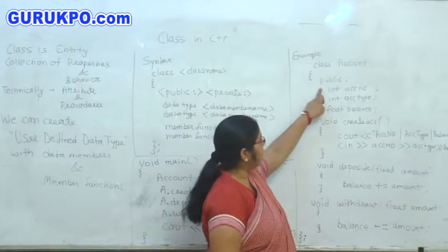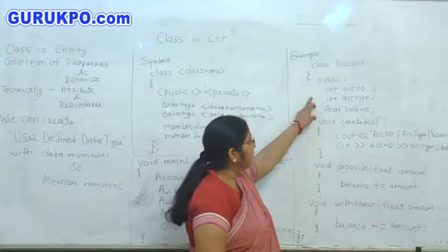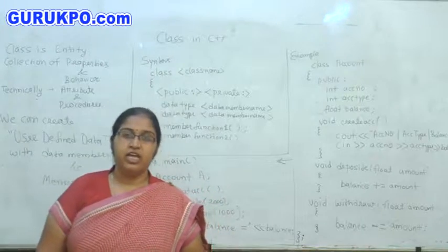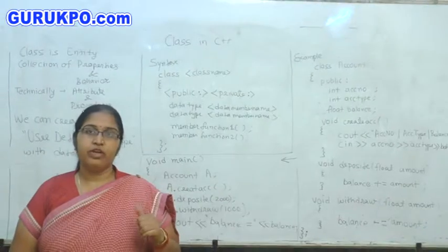You can see, here I specify the public specifier for all these data members. Public specifier specifies a data member or a member function that we can utilize this member from the object of class.